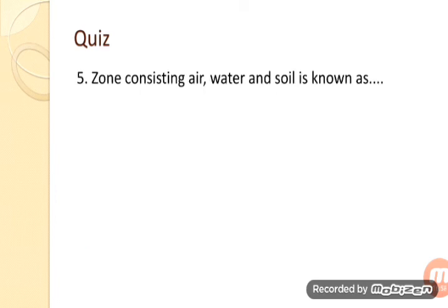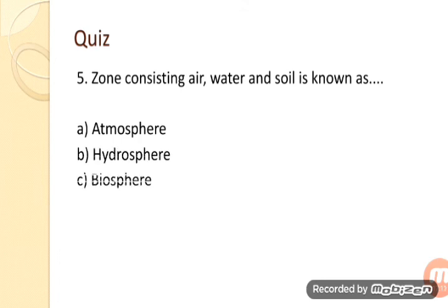Next question: Zone consisting of air, water and soil is known as? Option A: Atmosphere. Option B: Hydrosphere. Option C: Biosphere. Option D: Lithosphere. The correct answer is C — Biosphere. Biosphere consists of air, water and soil.